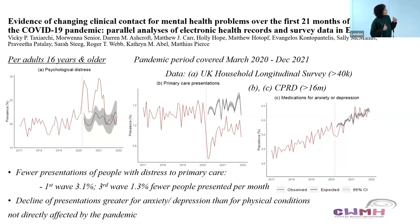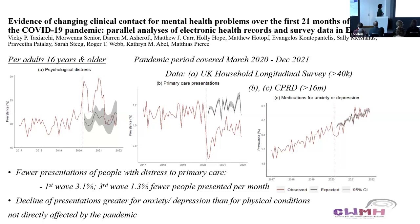We compared the observed rates to the expected rates had the pandemic not happened — predictions made through modelling. In terms of psychological distress, there was an immediate increase in the first two waves of the pandemic, which then balanced down to expected levels. In contrast, regarding primary care presentations, there was a big dip in presentations to the GP, probably due to difficulty accessing GPs at the beginning of the pandemic, which did not recover up to expected levels by the end of 2021.